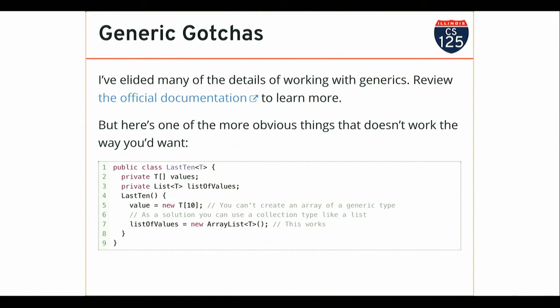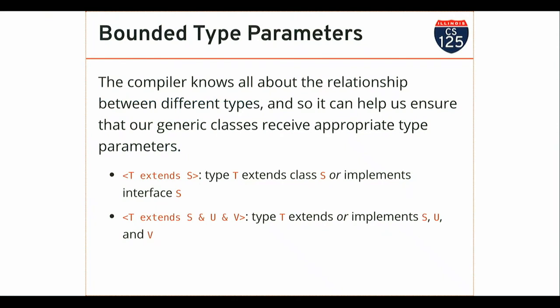The question was: can't a child only have one parent? That's true, but Java classes can implement multiple interfaces. So if I had a couple of different interfaces that all provided complementary functionality, I could do that with a bounded type parameter requiring multiple interfaces. That's not common, but it's kind of interesting.